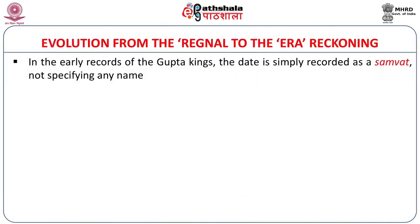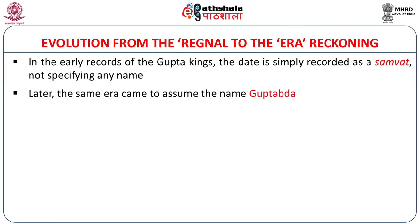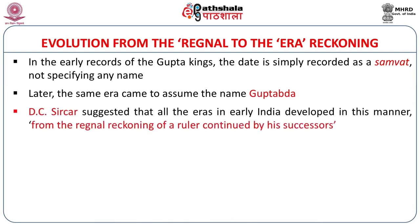If we look at the pattern of evolution of era from regnal reckoning to era reckoning, we find that in early records of the Gupta kings, the date is simply recorded as a samvat, meaning a year, not specifying any name. Later, the same era came to assume the name Gupta. D.C. Sarkar suggested that all the eras in early India developed in this manner, initially from the regnal reckoning of a ruler which is continued by his successor in later years and finally takes the shape of a date under a particular era.